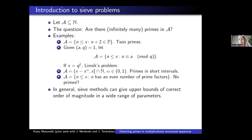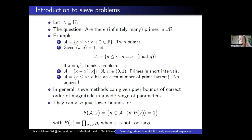In general, sieve methods can give us upper bounds of the correct order of magnitude for quite a wide range of parameters. For instance, we can get correct-order upper bounds for the number of twin primes, for primes in arithmetic progressions, and so on. As for lower bounds, classical sieve methods give lower bounds for the set S(A,z), which is the set of numbers in A whose all prime factors are at least z. If A is contained in integers up to x and we take z to be x to the half, then all numbers in S(A,z) are primes.